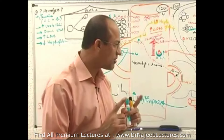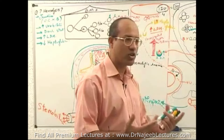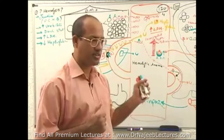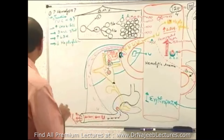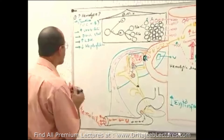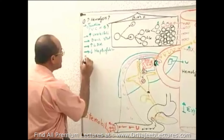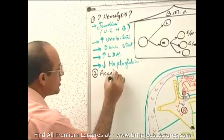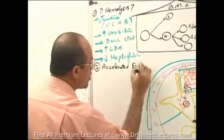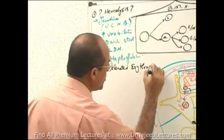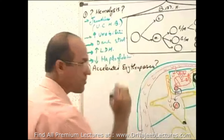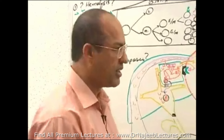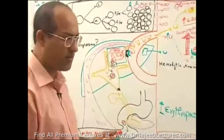The second major question when assessing a patient with suspected hemolytic anemia is: does the patient have accelerated erythropoiesis or not? Is there evidence that the bone marrow is trying to compensate? There must be evidence of accelerated erythropoiesis and bone marrow reaction to the situation.